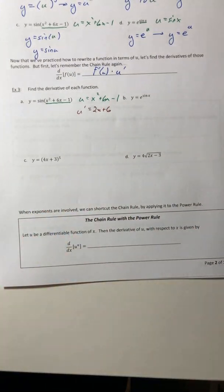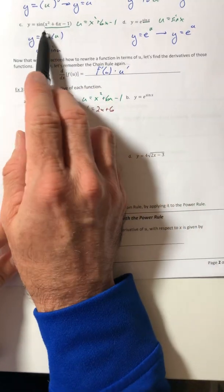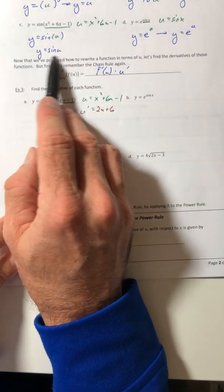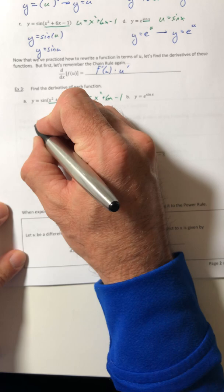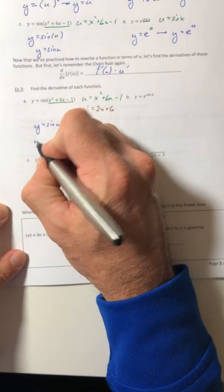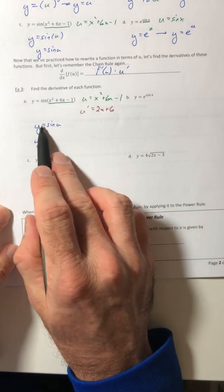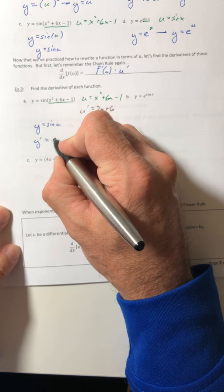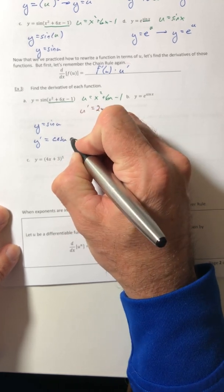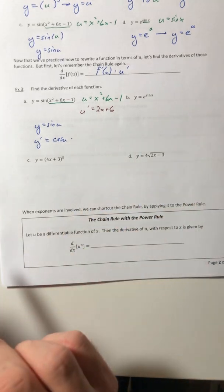So let's rewrite the function in terms of u. So from that previous example, I know it's just going to be y equals sine of u. So then y prime is going to equal, I just need to do the derivative of sine of u, which is cosine of u. But then I have to multiply it by u prime.